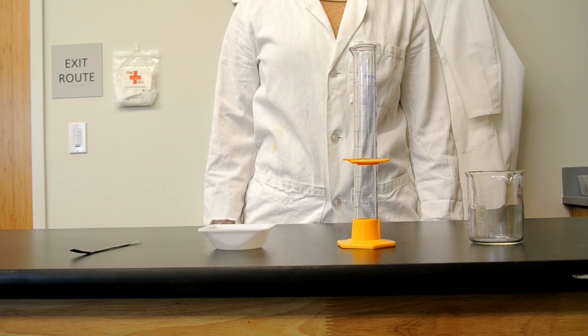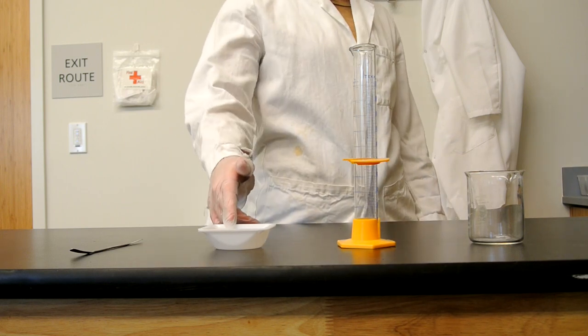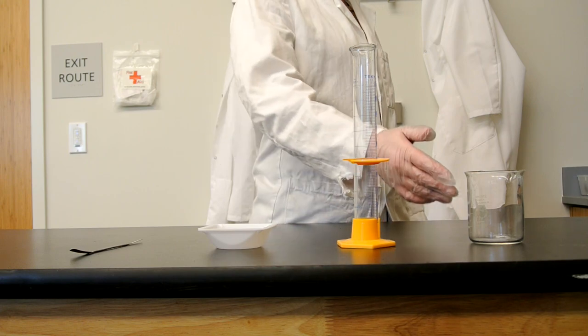You need different equipment for measuring solids and liquids. For solids, you'll need a spatula and some weigh boats. For liquids, a graduated cylinder and a beaker.